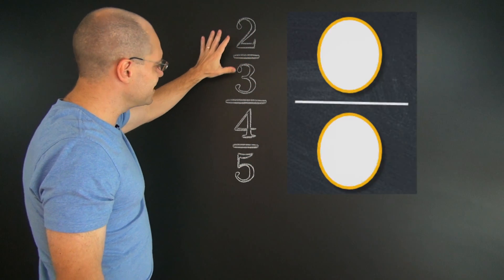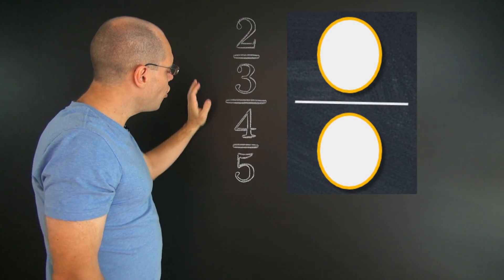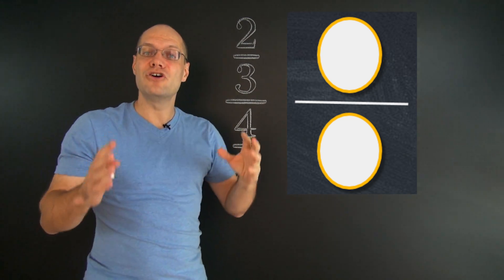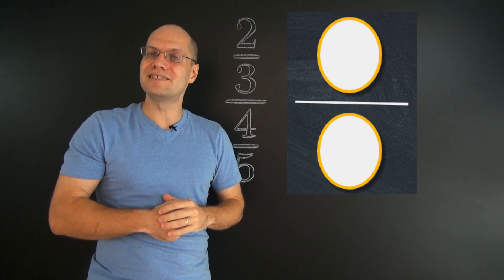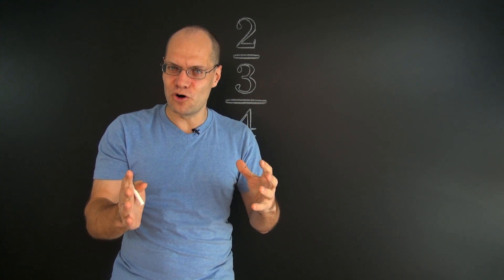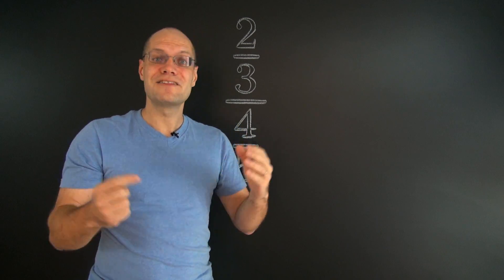It's something, it doesn't even matter what, over a fraction of four-fifths. That's the overall structure of this expression. Something over a fraction. And once we've assessed the overall structure of the expression, the rest is easy.